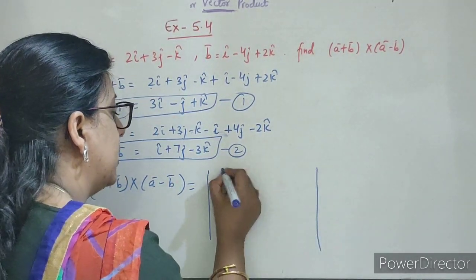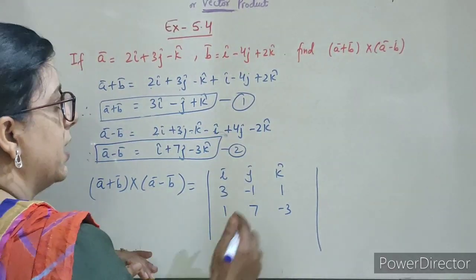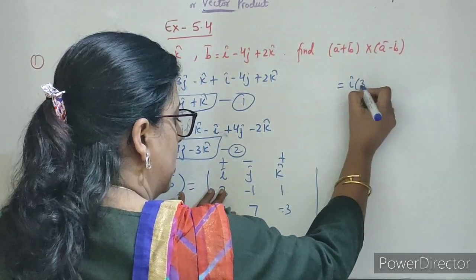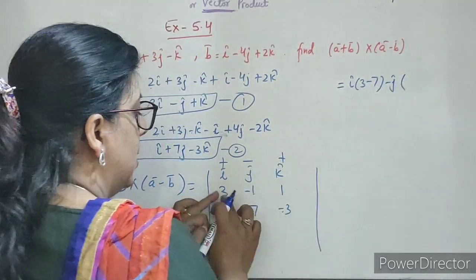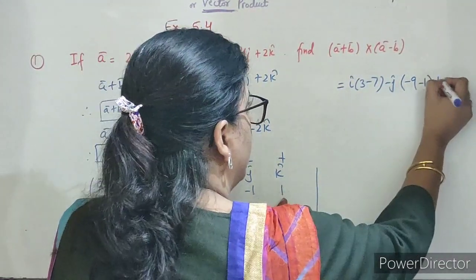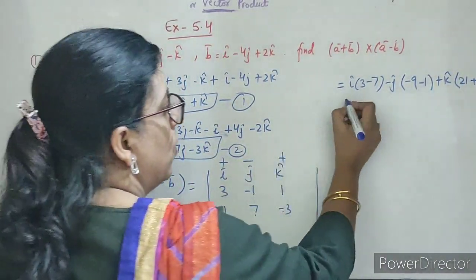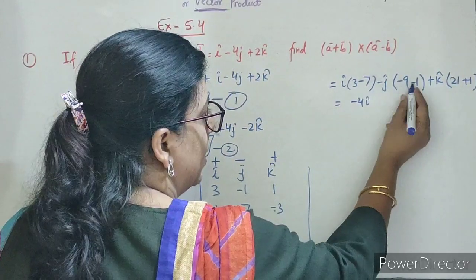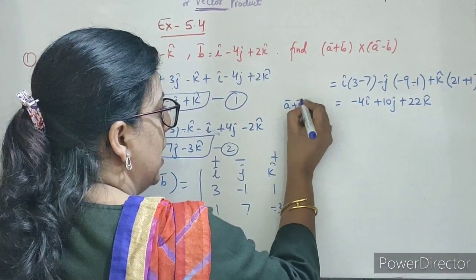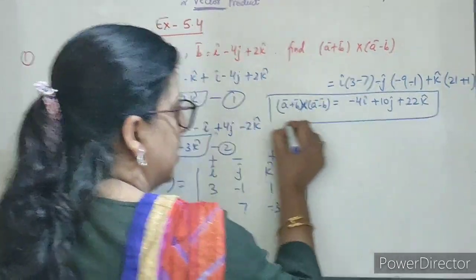Ab hamein dono vectors ka cross product nikalna hai: (A+B) cross (A−B). Cross product hum kaise nikalte hain — with the help of determinant. Solving: î(−3 − 7) − ĵ(−9 − 1) + k̂(21 + 1) = −4î + 10ĵ + 22k̂. This is the answer for A bar plus B bar cross A bar minus B bar.